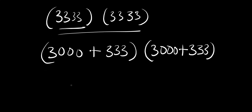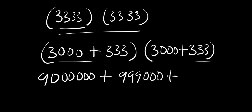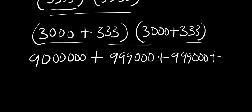We multiply 3000 times 3000, that is nine million. Plus we multiply 3000 times 333 and we are going to have 999,000. Plus we do the same thing here, we have another 999,000. Plus we multiply 333 times 333.